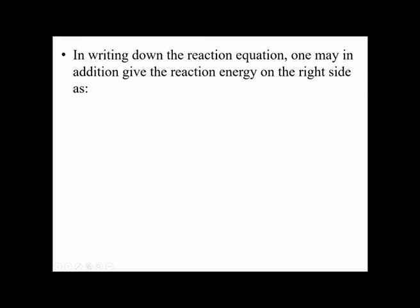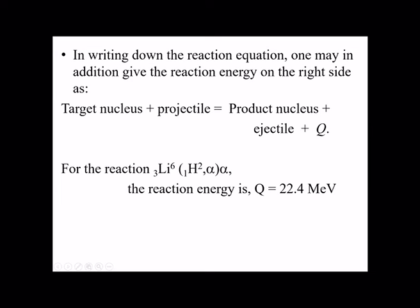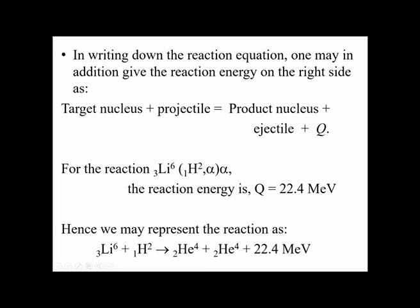When writing reaction equations, one may also include the reaction energy Q on the right-hand side: target nucleus plus projectile equals product nucleus plus ejectiles plus Q value. For our previous reaction, lithium-6 hit by deuterium gives two alpha particles, and we write it as: Li-6 + D → α + α + 22.4 MeV.